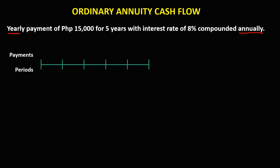To make a cash flow for this problem, we have the payments and the periods. Since the term is 5 years, we have periods 0, 1, 2, 3, 4, 5. The periodic payment is 15,000 pesos yearly, so we need to pay 15,000 pesos every year.